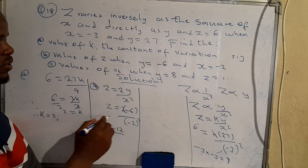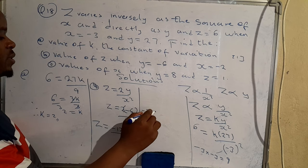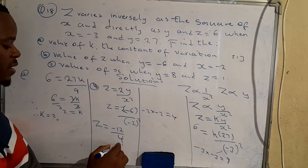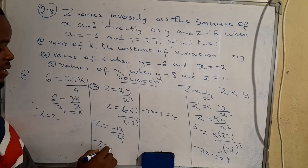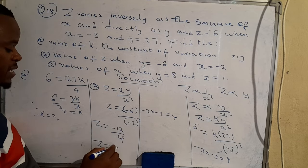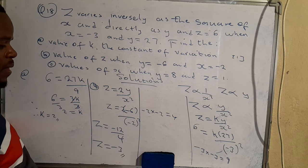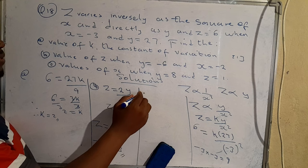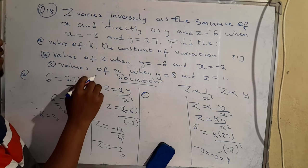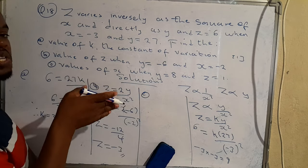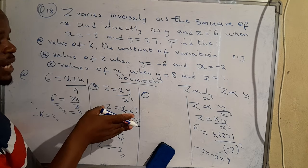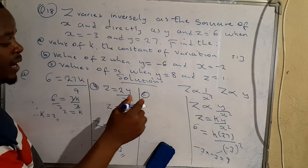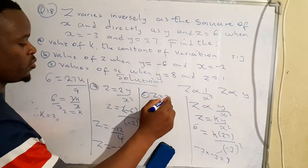Expanding the denominator: negative 2 times negative 2 gives positive 4. So z = −12/4 = −3. That's our answer. Now let's move on to part c, which uses the same equation z = 2y/x² with the constant value already determined.